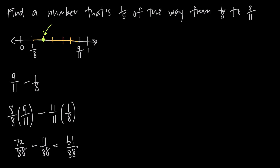Now we need to find the length of just one-fifth of this distance. To find one-fifth of 61 over 88, we multiply by 1 fifth — dividing by 5 is the same as multiplying by 1 fifth. Multiplying across gives 61 over 440. So the distance between 1 eighth and the point we're interested in is 61 over 440.